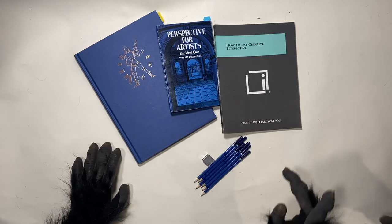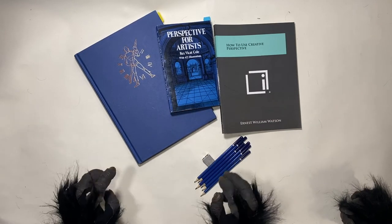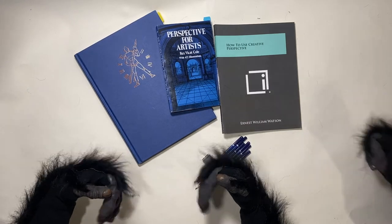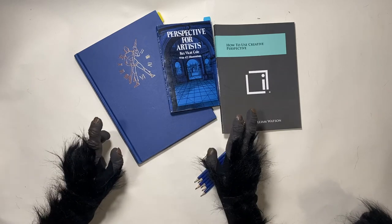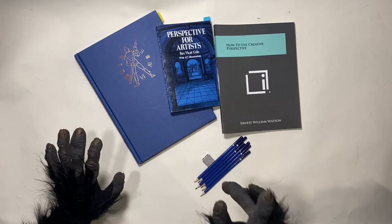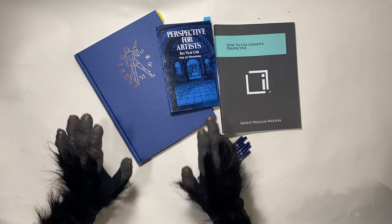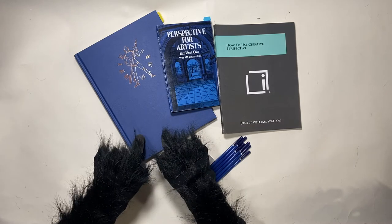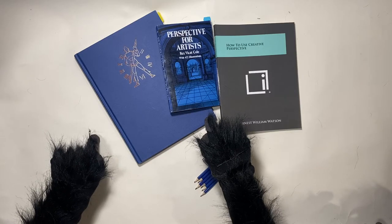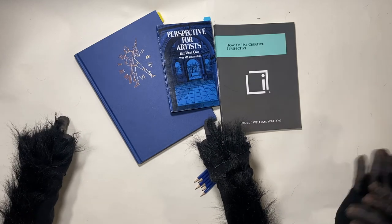Next concept is the station point and line of sight. Don't be intimidated by these two technical terms — both concepts are incredibly simple. So simple, I got them. Where you're sitting or standing, perhaps relaxing and drinking mojitos, is the station point. You're stationary at this point. The line of sight is simply the distance between your station point — you relaxing with the mojitos — and your subject. That's it.